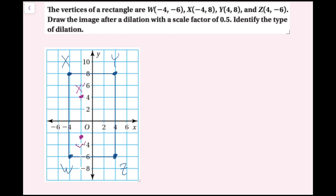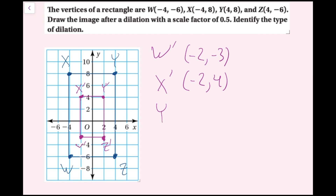For y it's (4, 8), divide by two, giving (2, 4). For z(-4, -6) halved gives (-2, -3), that is z prime. I'll draw my rectangle and label the image coordinates: w prime is (-2, -3), x prime is (-2, 4), y prime is (2, 4), and z prime is (2, -3). Since my image is getting smaller than my original figure, this is a reduction.